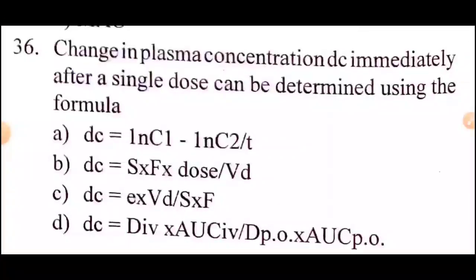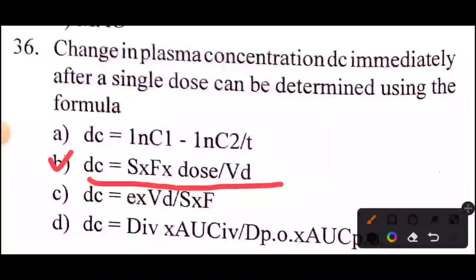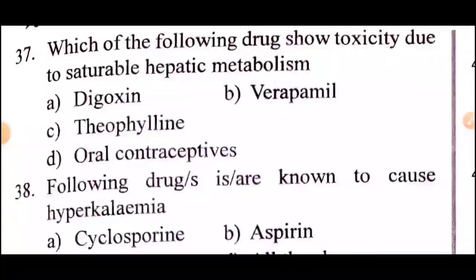Question 36: change in plasma concentration immediately after a single dose can be determined using the formula? Answer: option B, ΔC = S × F × dose / Vd.